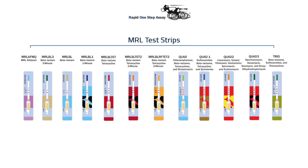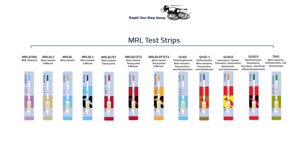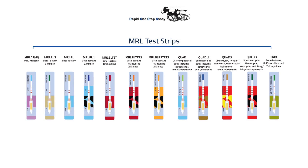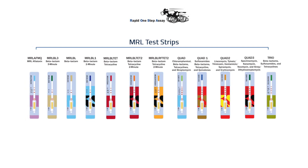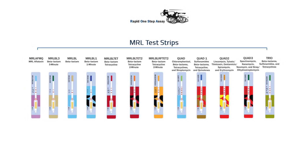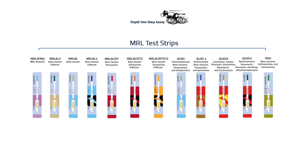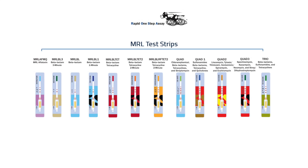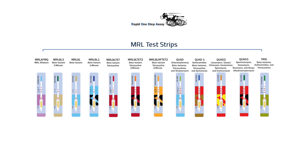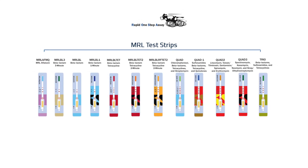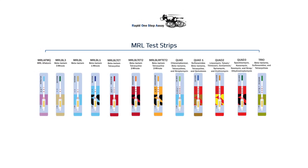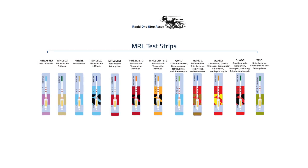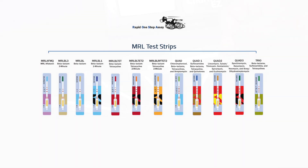Tests are available for individual antibiotic groups, as well as combinations such as the 2-minute beta-lactam tetracycline test, or the 5-minute QUAD-1 test covering beta-lactams, sulfonamides, tetracycline, and quinolones in a single test.